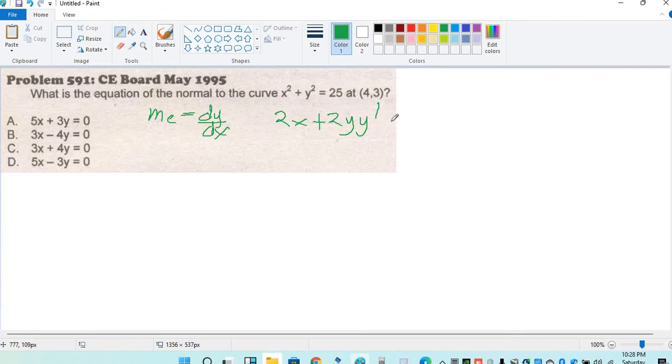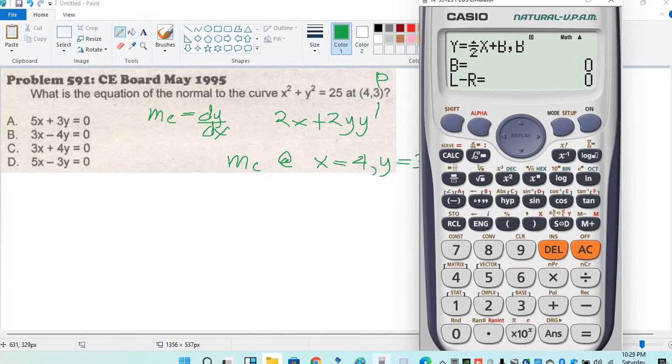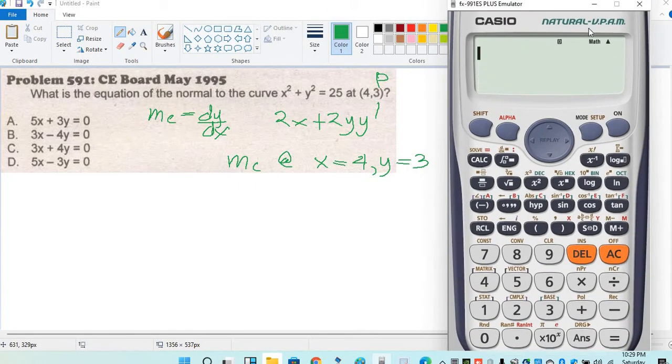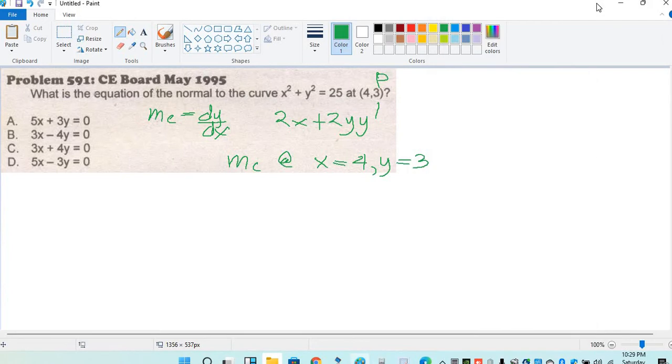No need na ilagay yung 0. Point P, slope ng curve at point P, x is equal to 4 and y is equal to 3. Using calculator, y prime becomes a sa calculator technique.